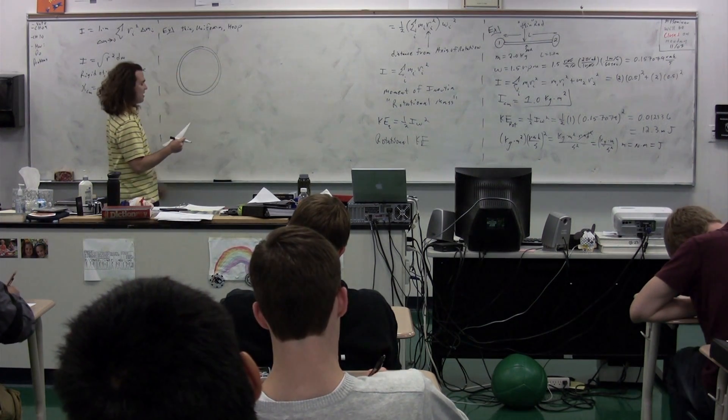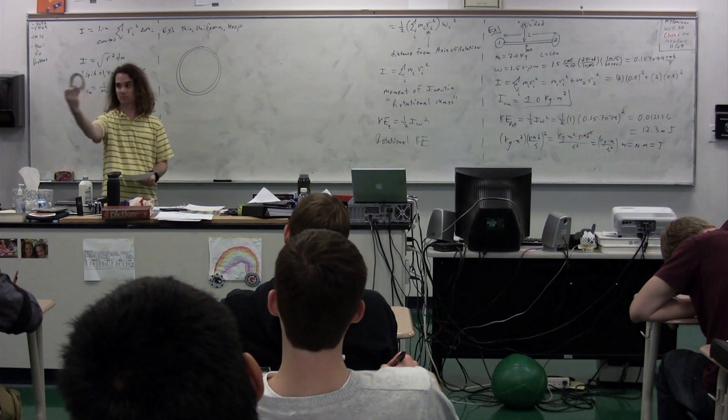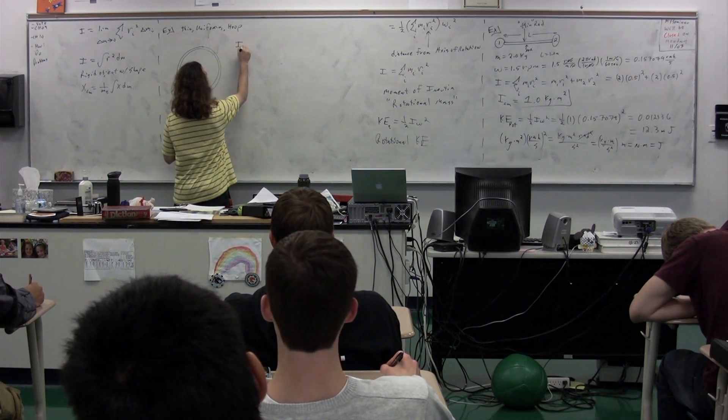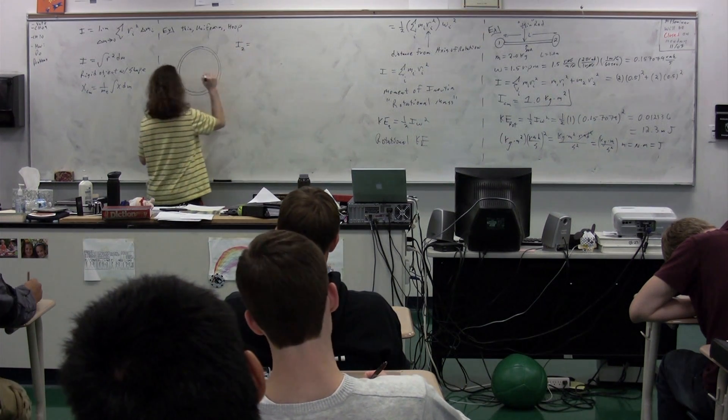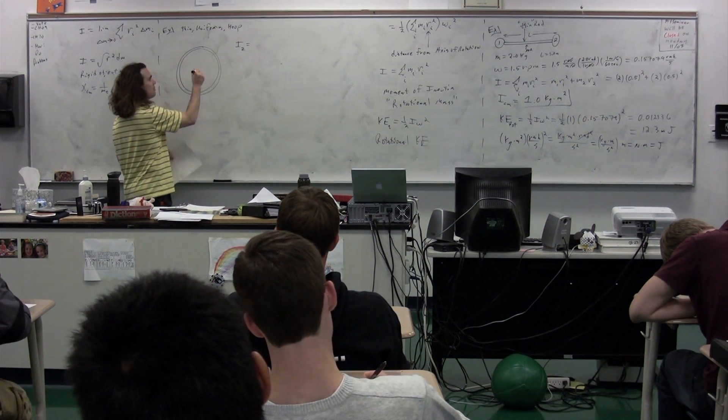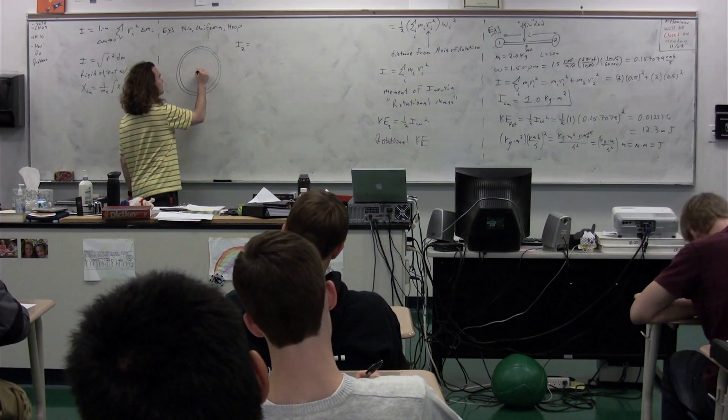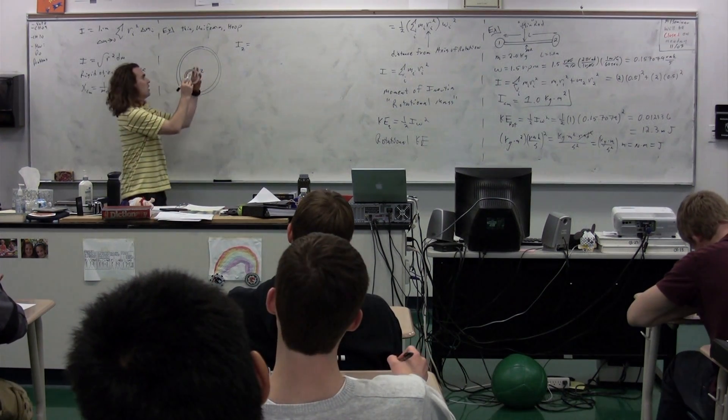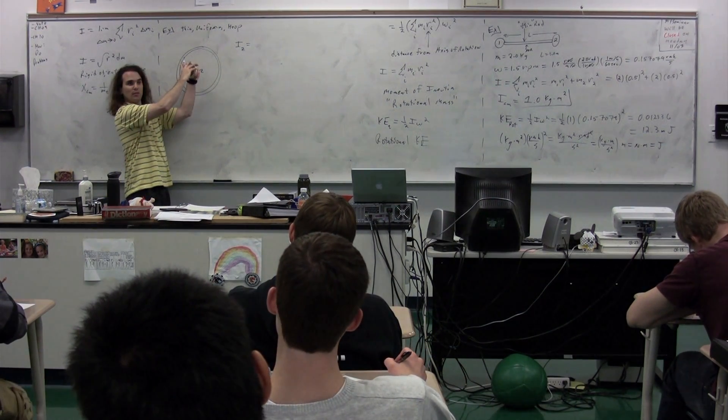So we have our hoop, which is up here. We're going to figure out the moment of inertia about the z-axis. The z-axis would come out of the board like this. So we're figuring out what the moment of inertia of this object would be to spin it this way.